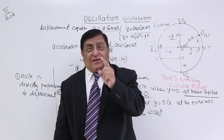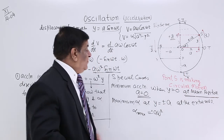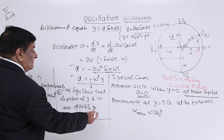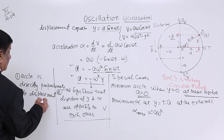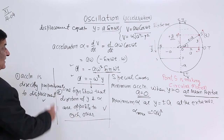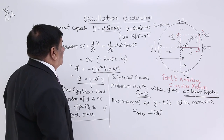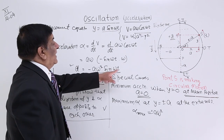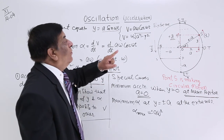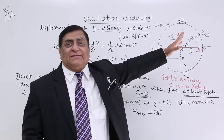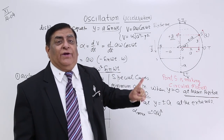Number two: acceleration should be proportional to displacement. Number three: it should be represented by a sinusoidal function — either sin or cos. So what type of motion does P have? P has simple harmonic motion, because it satisfies all three criteria.